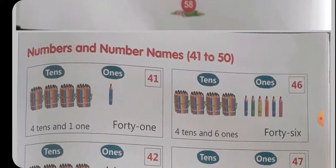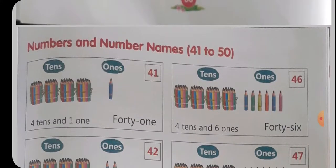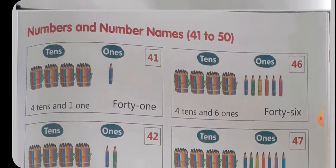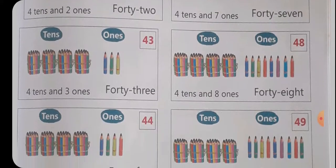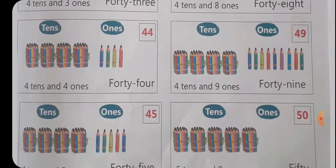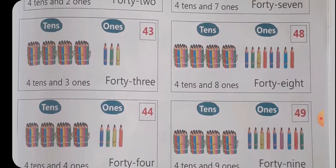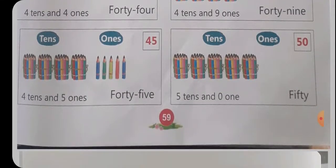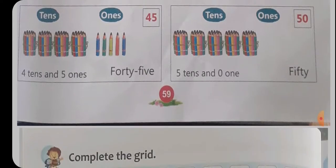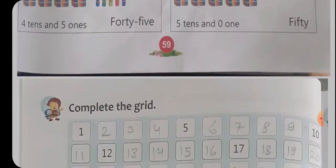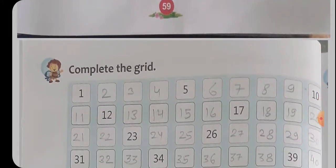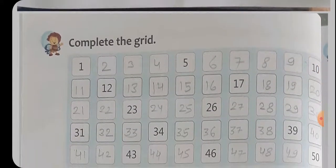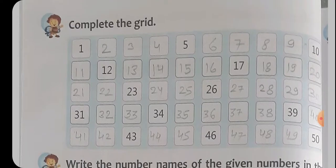31 से 40 तक के बाद Next है 41 to 50। 41, 42, 43, 44, 45, 46, 47, 48, 49, 50। यह 50 तक Numbers Names हैं आपके 21 से लेके 50 तक के — यह आपको Learn करने हैं Numbers Names, ठीक है, और अपनी Notebook में लिखने हैं। Next है आपका Complete the Grid।